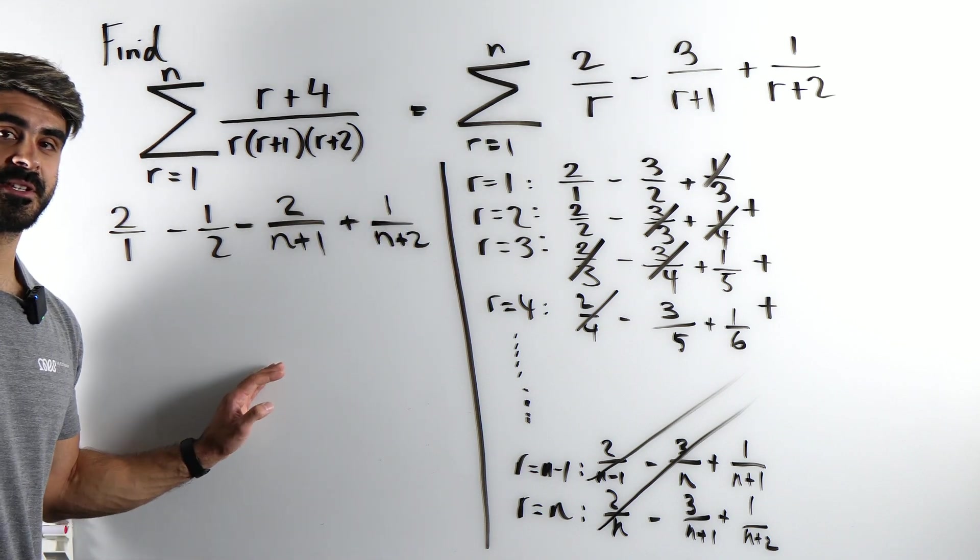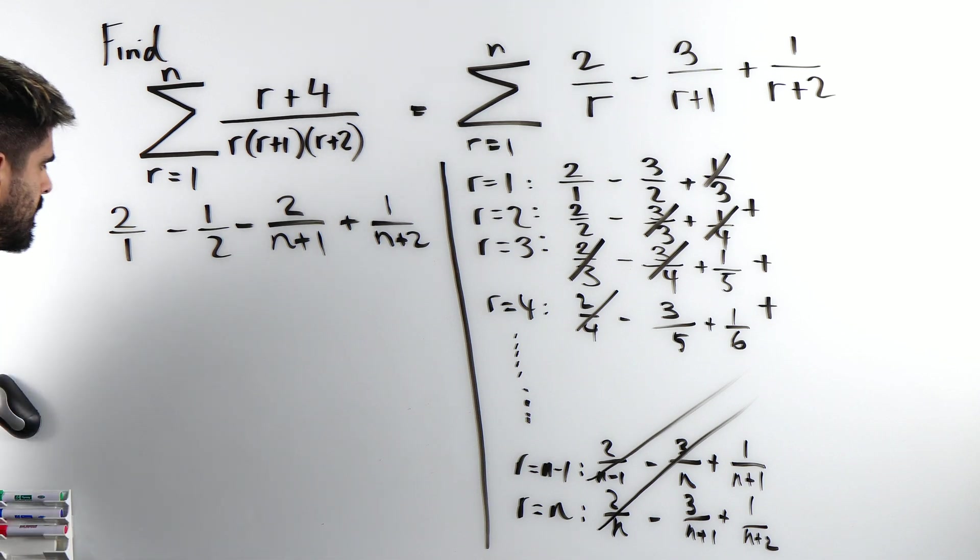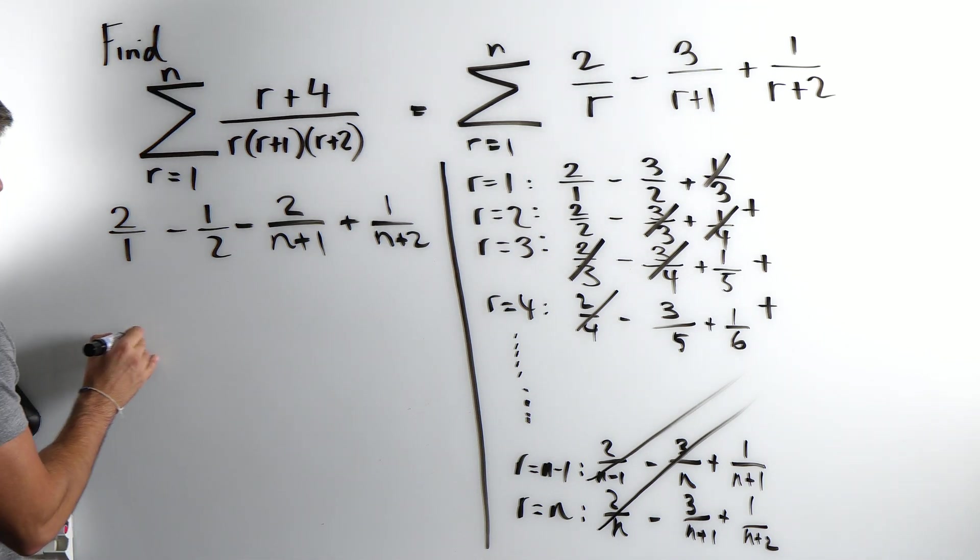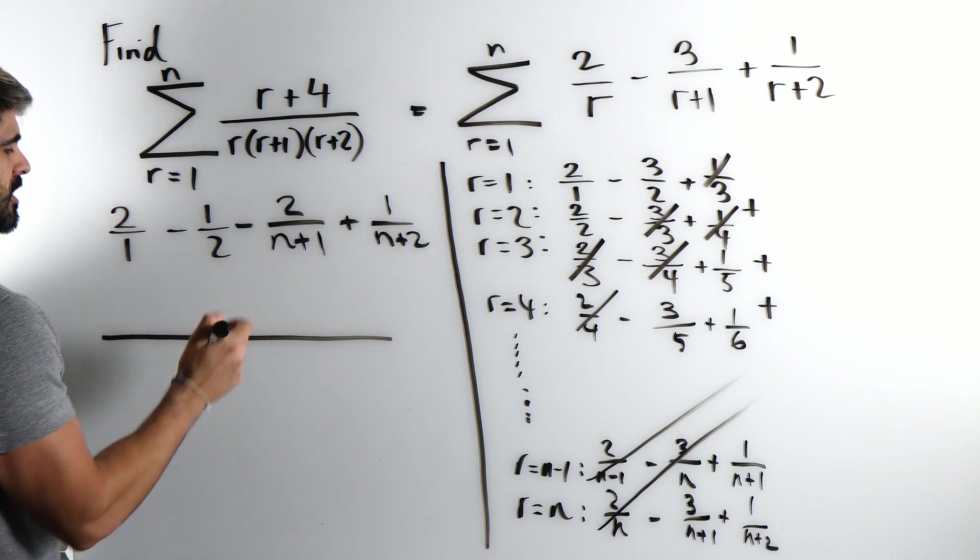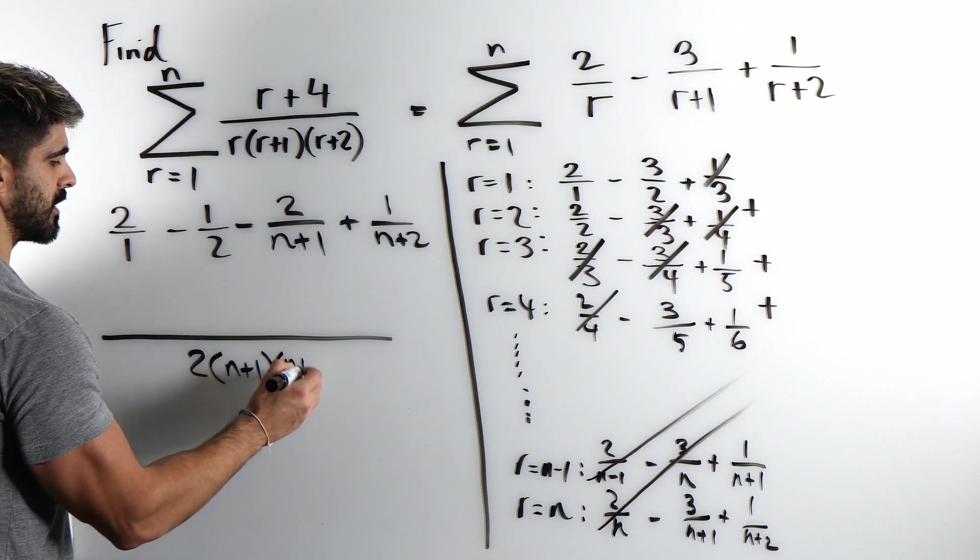Now a lot of people make the mistake here when it comes to combining the fractions. So just take your time, avoid any silly mistakes. So we're going to take one of everything, it's going to be 2 lots of n plus 1 and n plus 2.